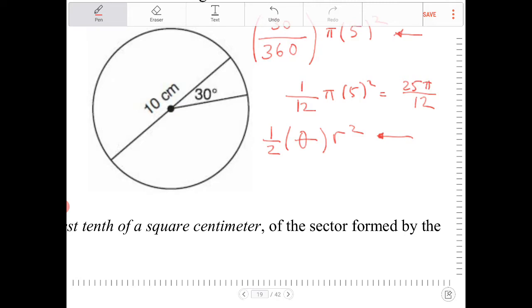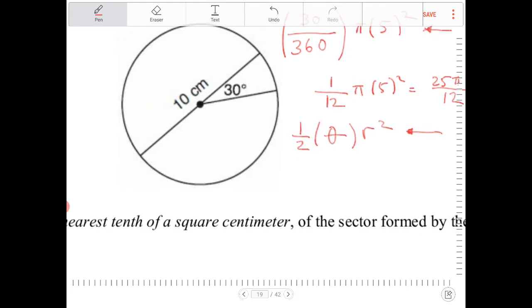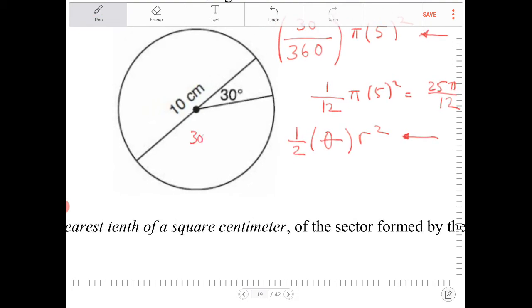Anyway, so the difference is theta is measured not in degrees but in radians. So we're going to have to convert 30 degrees into radians. So what is 30 degrees in radians?